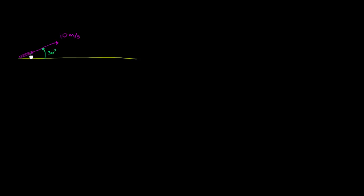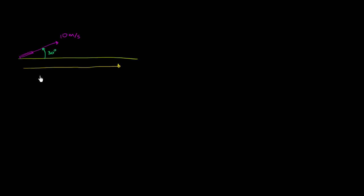I've got a rocket here, and this rocket is going to launch a projectile — maybe a rock of some kind — with a velocity of 10 meters per second. The direction of that velocity is going to be 30 degrees upwards from the horizontal, or the angle between the direction of the launch and the horizontal is 30 degrees. What we want to figure out in this video is how far does the rock travel?